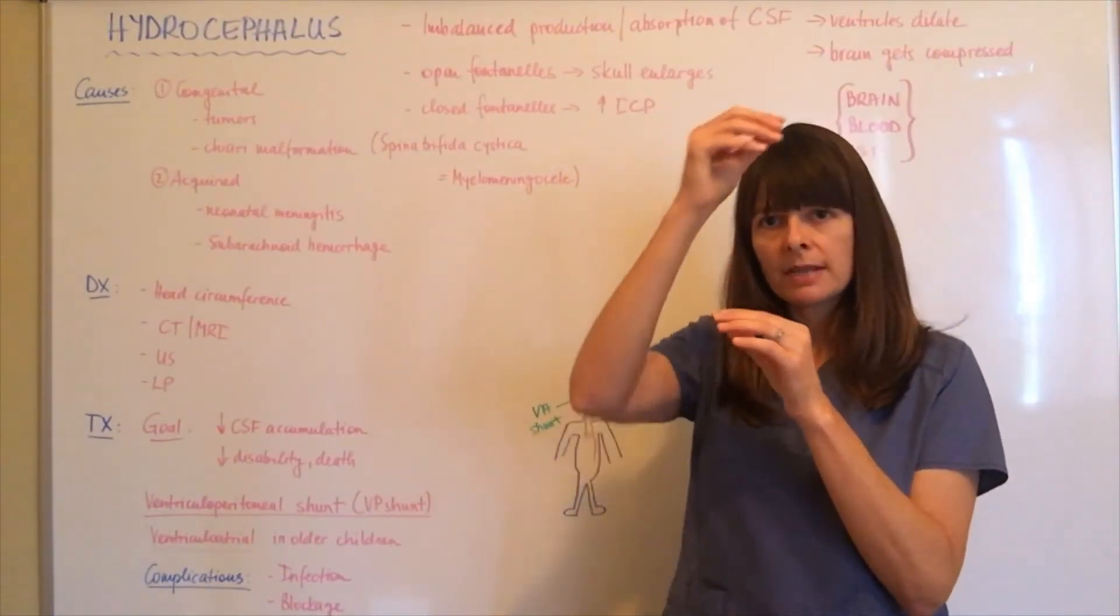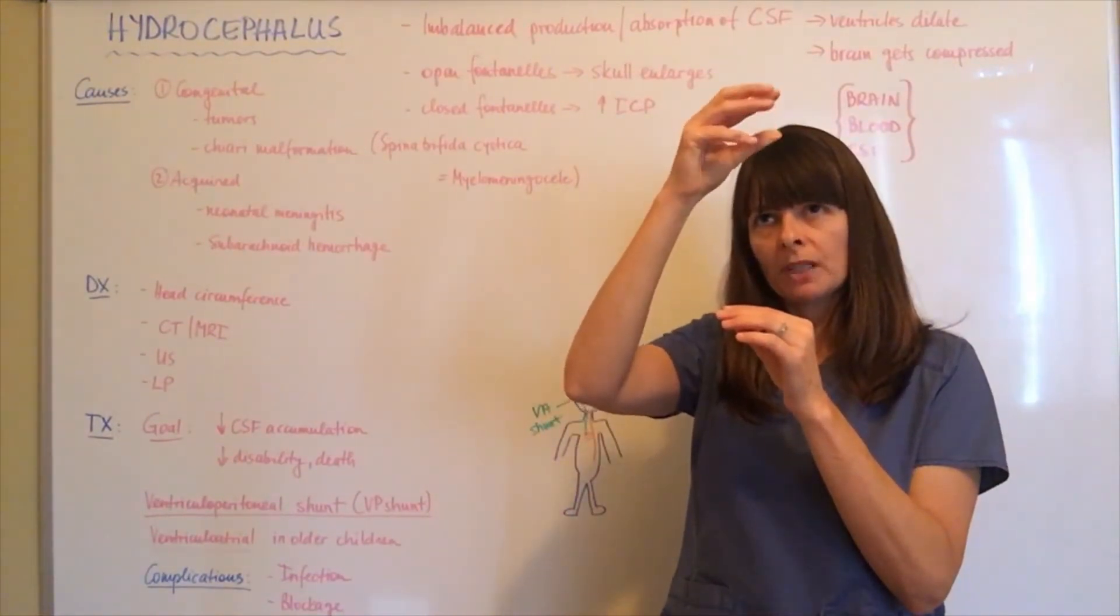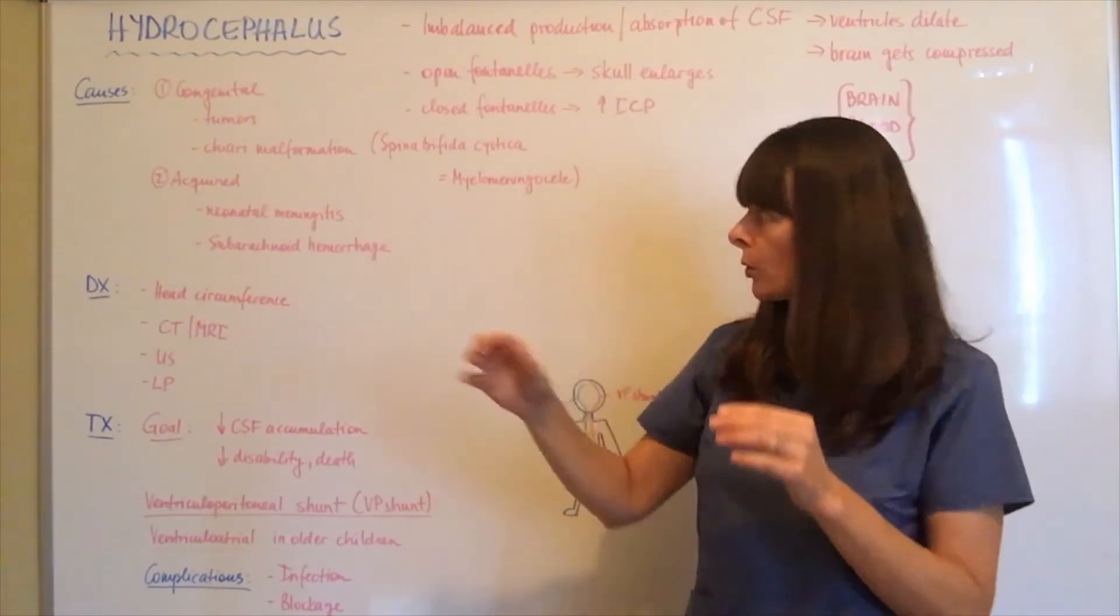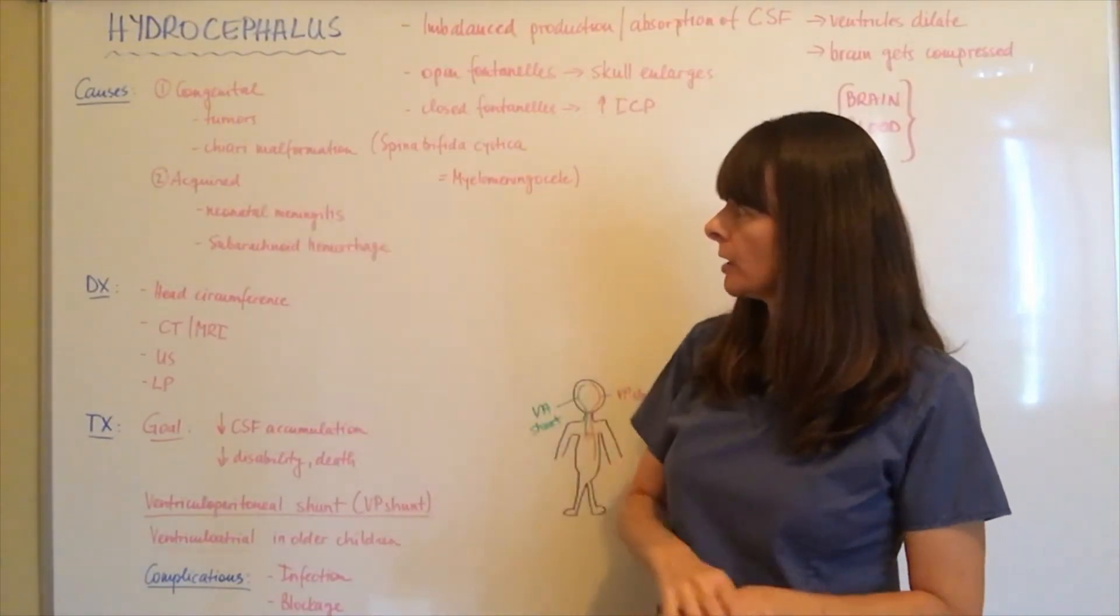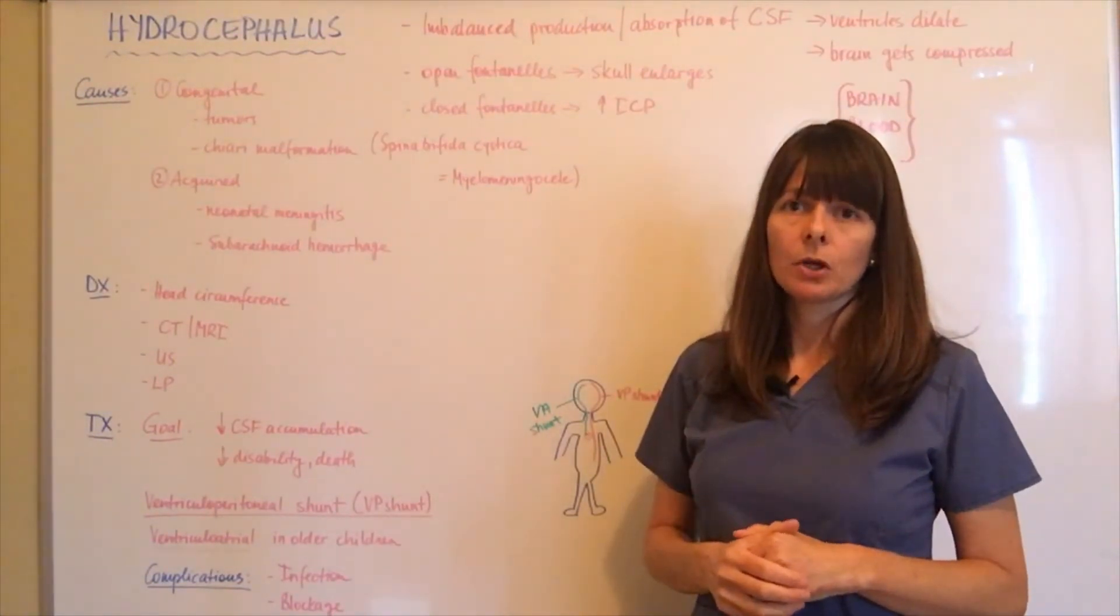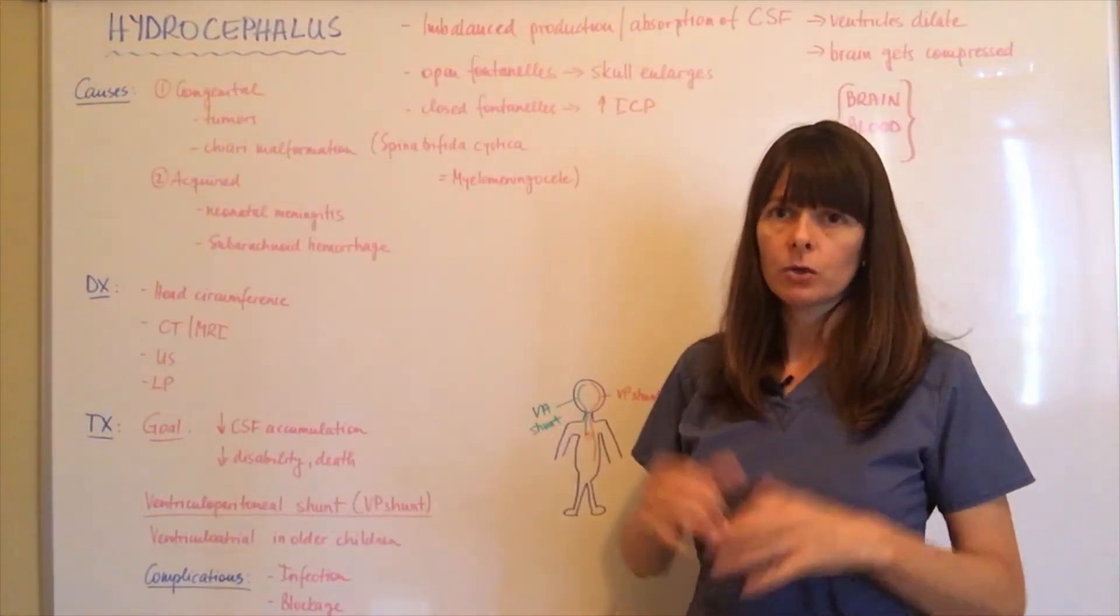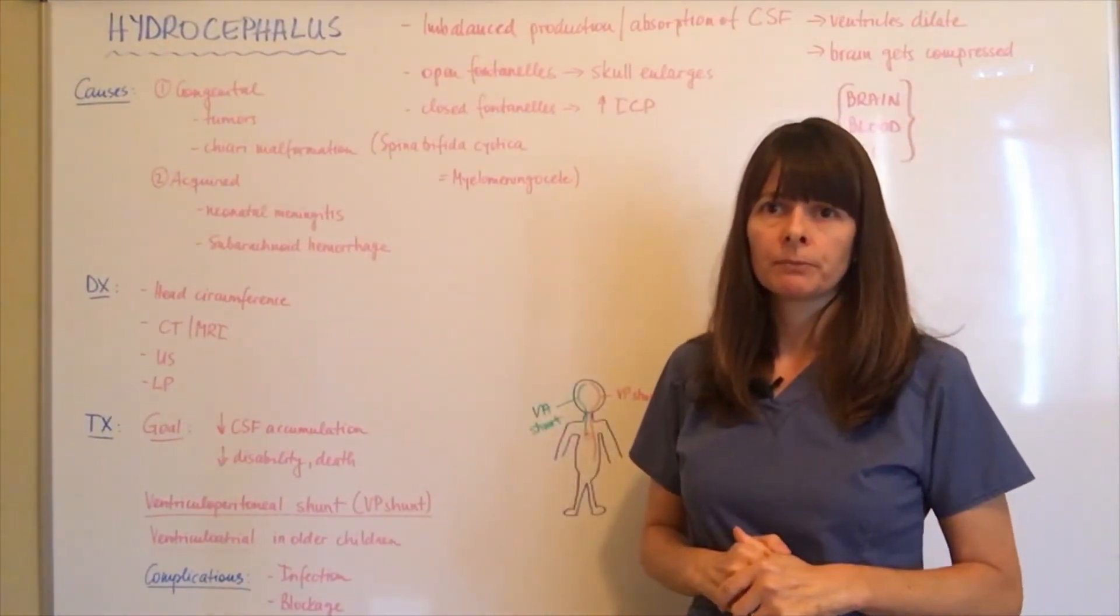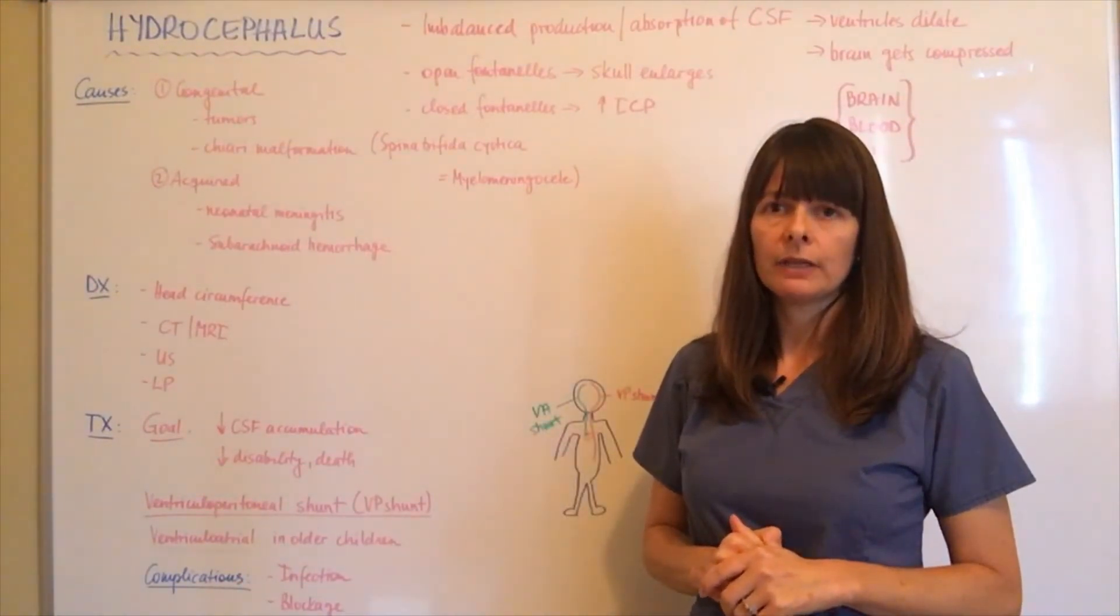If this protrusion happens, the brain kind of gets sucked down into the spinal cord—this is called a Chiari malformation. In turn, cerebral spinal fluid will increase, causing increased pressure in the cranial cavity and enlargement of the skull with all those complications.